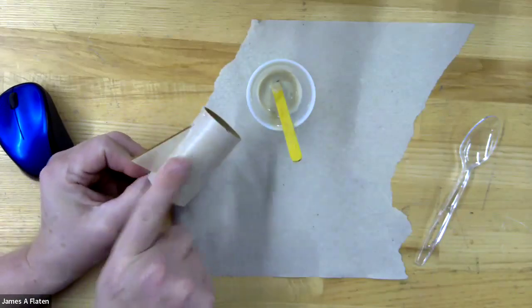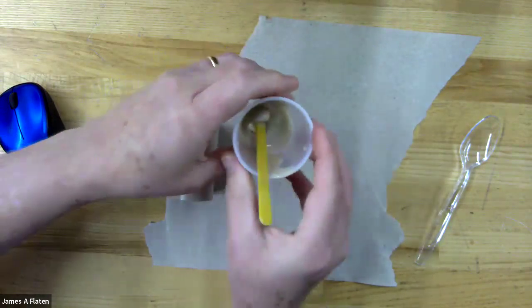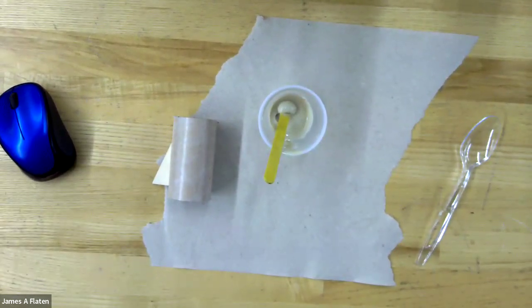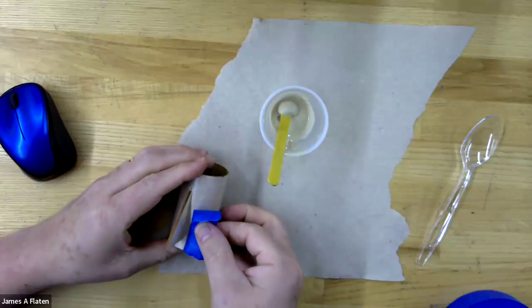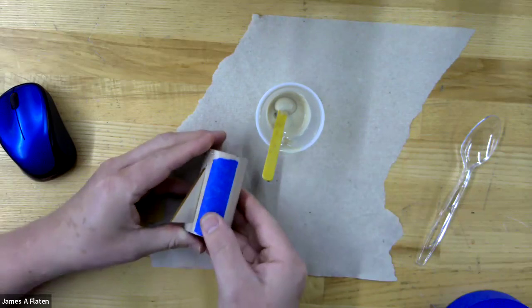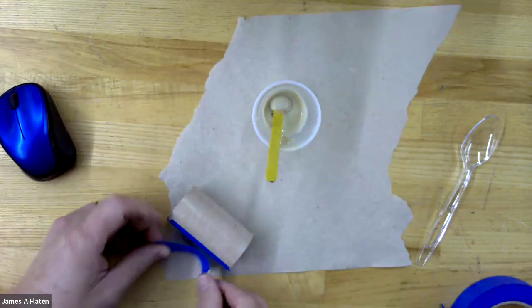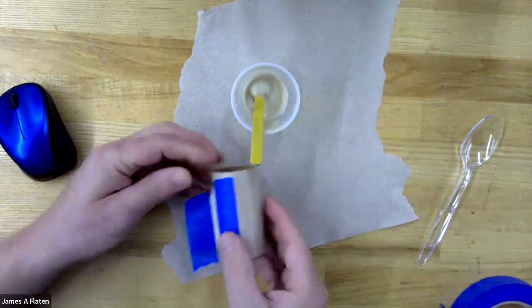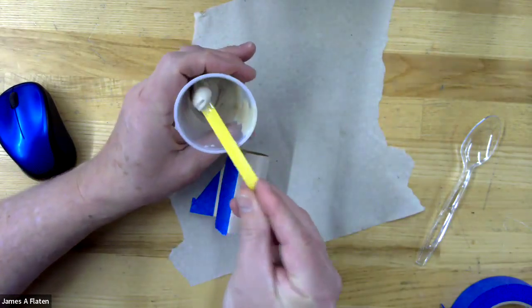I could potentially put tape here and here to make sure the epoxy doesn't go anywhere that I don't want it to. Let me put some tape on, parallel to the fin on the airframe, and then on the fin itself, parallel to the airframe. This will cover up things that I don't want epoxy to go on and give me the ability to smear the epoxy around a little bit more without worrying so much about where it goes.